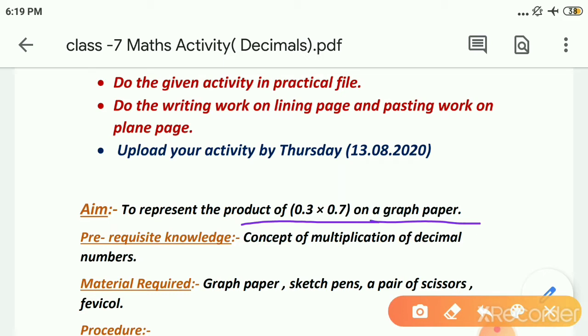So we have to show this multiplication, this product on a graph paper. Now when we will take the graph paper, which type of graph paper we need? What materials we require? So I am telling you what material we require. We need a graph paper for this. As I told whatever practical file you are using, at the back of it there are graph papers. Otherwise you can take any graph paper. Sketch pens, different colors, a pair of scissors and Fevicol. So these are the materials which are required.